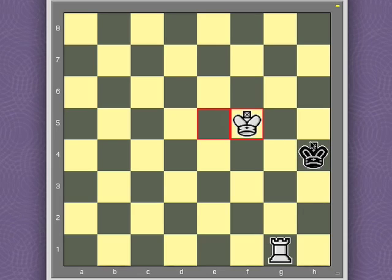If the black king now moves to h5, the rook will move from g1 to h1, and that'll be checkmate. So the black king really has only one reasonable alternative. That's to move to h3. The white king continues to follow.